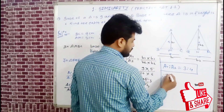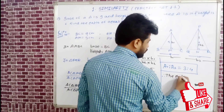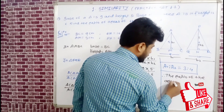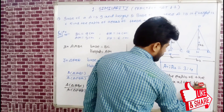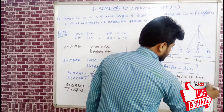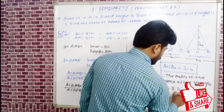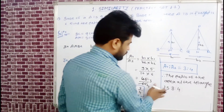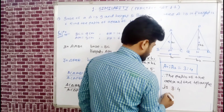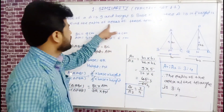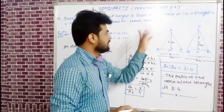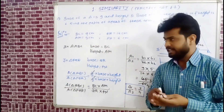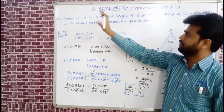Therefore, the ratio of the areas of the triangles is 45 to 60, which simplifies to 3 ratio 4. This was Question 1 of Practice Set 1.1.